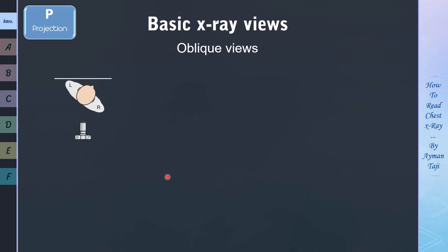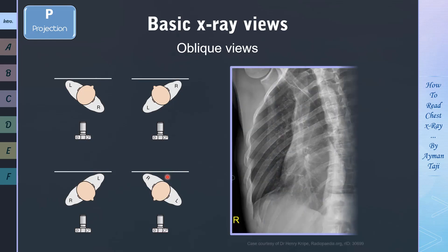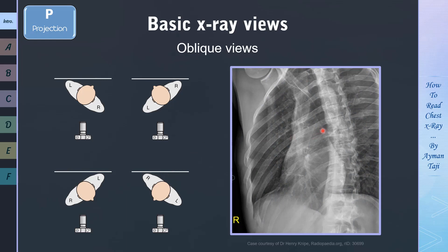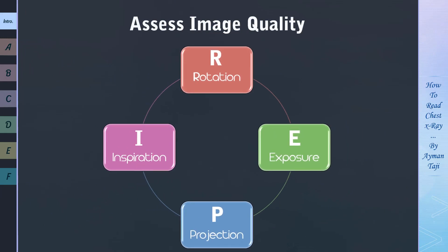So there are left anterior oblique, right anterior oblique, left posterior oblique, and right posterior oblique. Just place the ribs you want closer to the receptor, and the result will be like this. You can almost see the whole rib here. Now, we move on to the final technical factor, which is exposure or penetration.